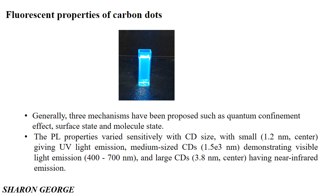In the case of an average size around 1.2 nanometers, the carbon dot shows UV light emission. When the size of the carbon dot is around 1.5 nanometers, it emits in the visible range — from 400 to 700 nanometers. A quantum dot is generally a semiconductor nanoparticle less than 10 nanometers, and carbon dots are also less than 10 nanometers. If the larger carbon dot is around 3.8 nanometers, it shows infrared emission.